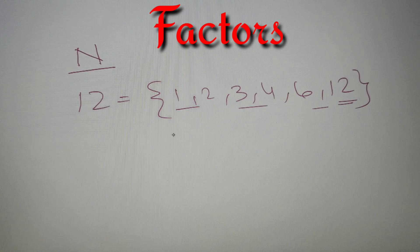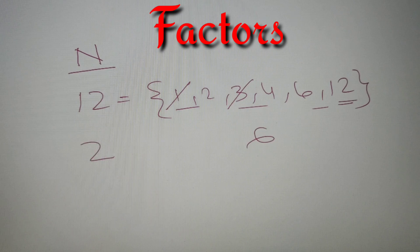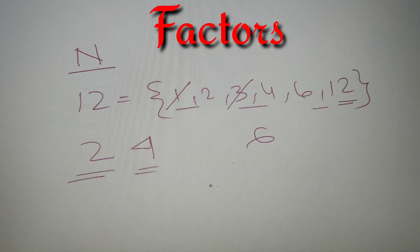Now since we are more interested in finding out how many of them are odd, let us find out. I can see that 1 is an odd factor and 3 is an odd factor. So out of 6 factors, there are 2 odd factors and 4 even factors.